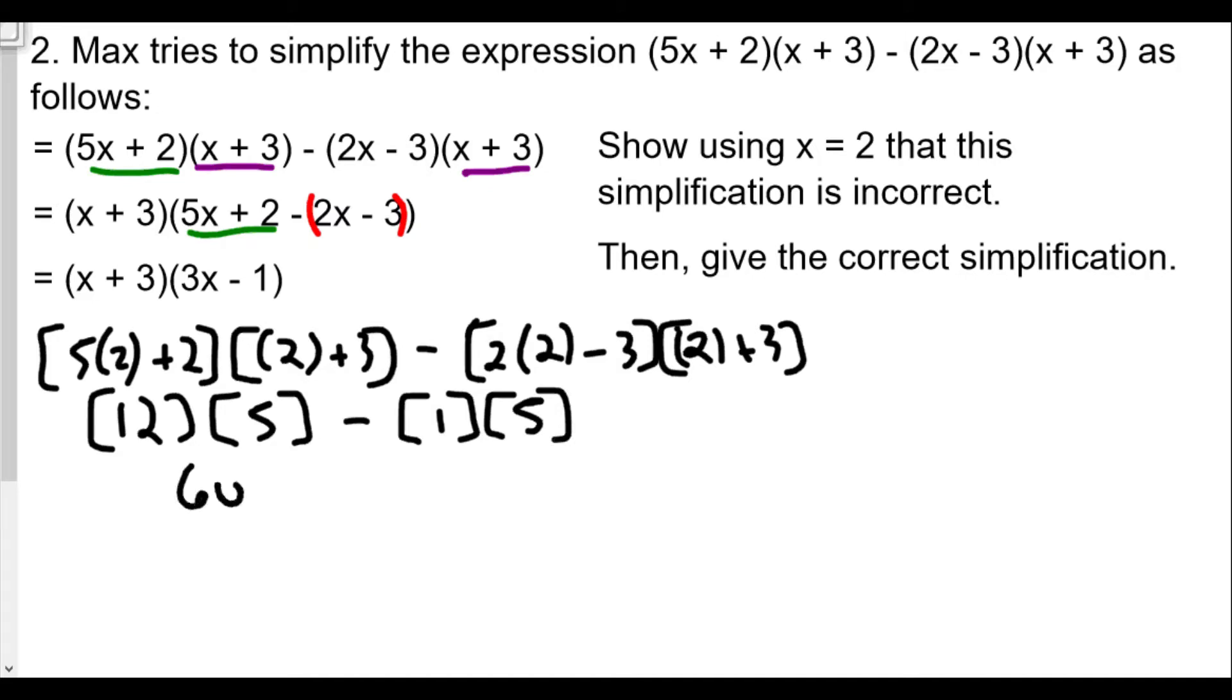We're going to get 12 times 5 is 60 and then minus 1 times 5 is 5, so we should get 55 here. Now we're going to check against their result here, the (x + 3)(3x - 1).